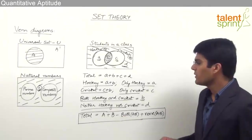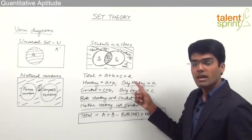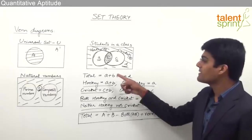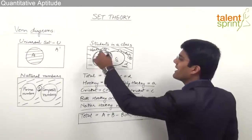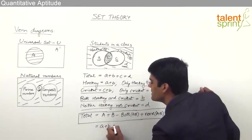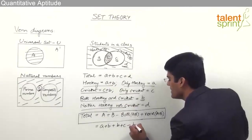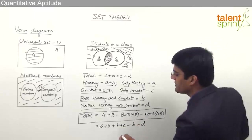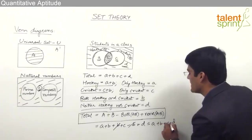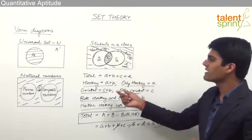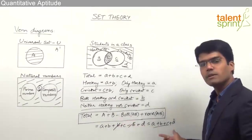The proof for this formula is as follows. We know the total equals region a + b + c + d. In the formula, set A equals (a + b), set B equals (b + c), both A and B equals region b, and none equals region d. So the formula gives (a + b) + (b + c) − b + d, which simplifies to a + b + c + d since the two b's cancel out. This confirms that the formula is consistent with the diagram.